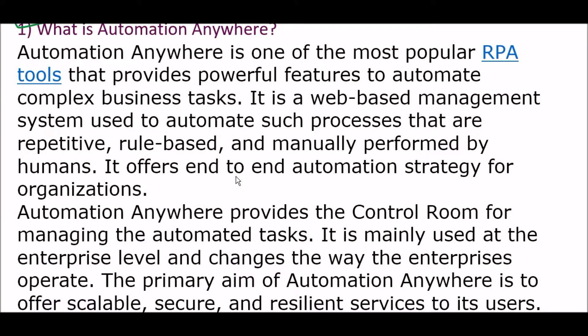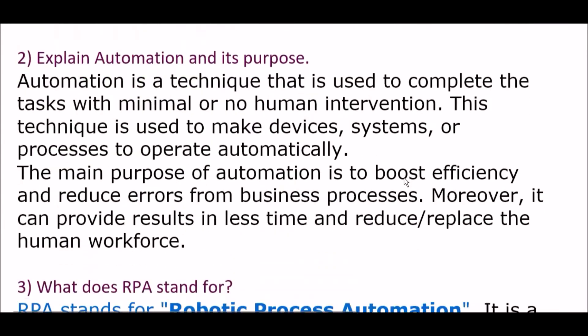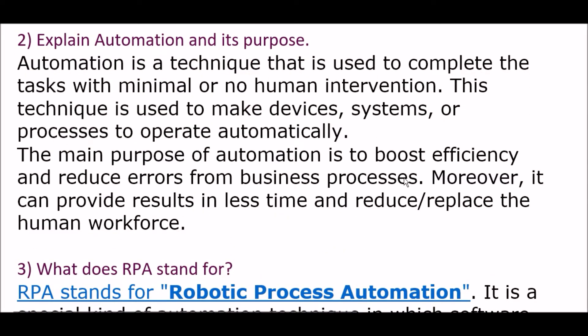Automation Anywhere is one of the most popular RPA tools that provides powerful features to automate complex visualization tasks. It's a web-based management system used to automate processes that are repetitive, rule-based, and manually performed by humans. It offers end-to-end automation strategy for organizations. Automation Anywhere provides the control room for managing automated tasks and is mainly used at the enterprise level. The primary aim of Automation Anywhere is to offer scalable, secure, and resilient services to its users.